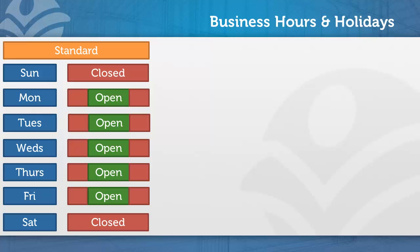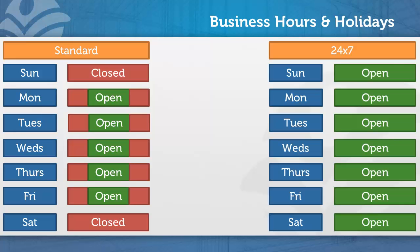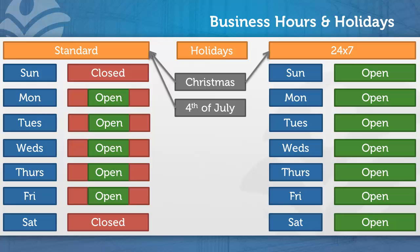That's really what business hours and holidays allow you to do — set the framework for your hours of operations. You can set up multiple business hours and multiple holidays. I could have a standard team open 8 a.m. to 5 p.m., and a 24x7 or gold or premier team open all the time. My 24x7 team might get Christmas off, while my standard team also gets the 4th of July. You have a lot of granularity — you can have many different business hours, many different holidays, and many holidays related to many different business hours.